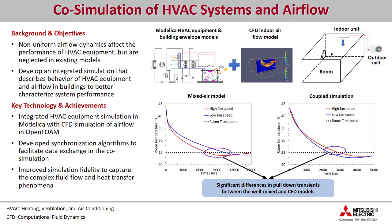Now we can compare the performance of the simulation with the well-mixed assumption that everybody uses, with the co-simulation that we developed, to understand the differences between these two, so that we can do better control design and the system can have better thermal performance. We simulated the pull-down performance of our room air conditioner under different fan speeds. It turns out the system dynamics with the lumped parameter model of the room are very much different from those with the much more accurate CFD model of the room.